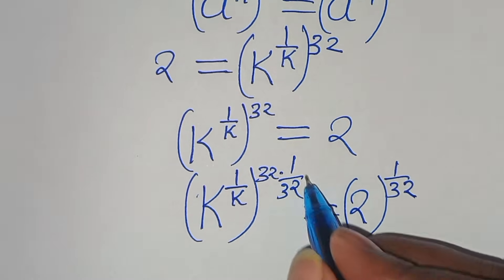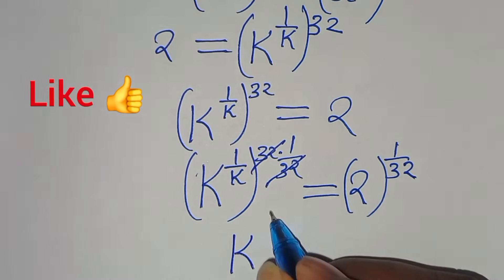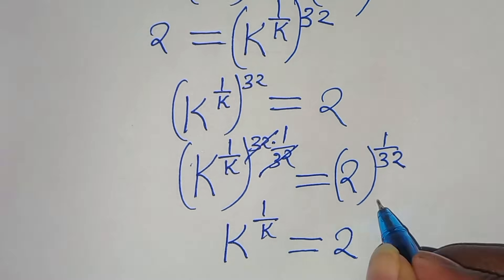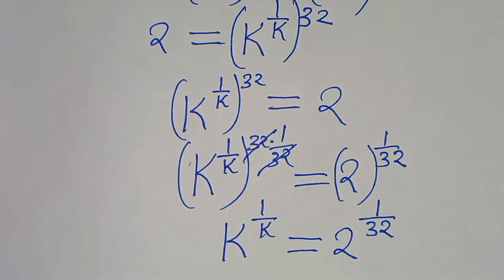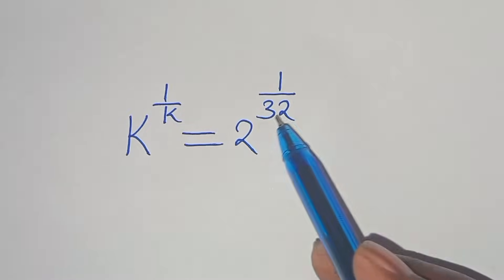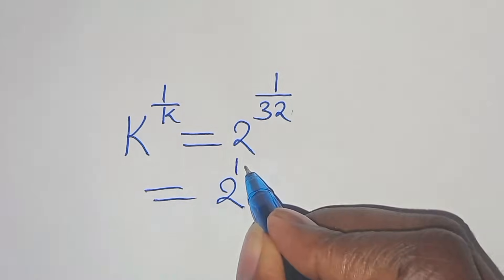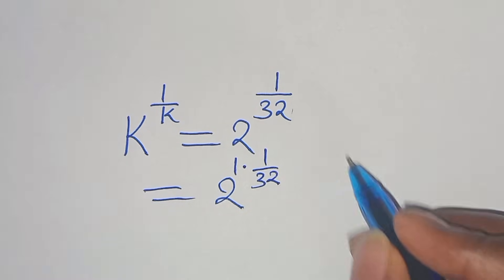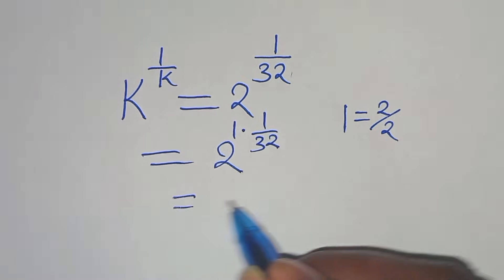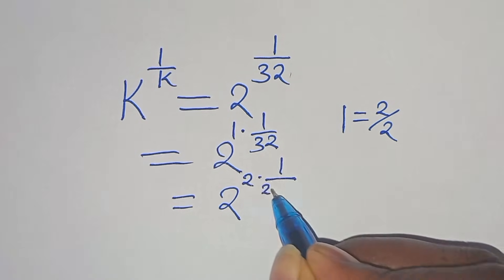Simplifying, we get k to the power of 1 over k equals 2 to the power of 1 over 32. Now we rewrite the right side: 2 to the power of 1 over 32 equals 2 to the power of 1 times 1 over 32. We express 1 as 2 over 2, so we have 2 to the power of 2 over 2 times 1 over 32.